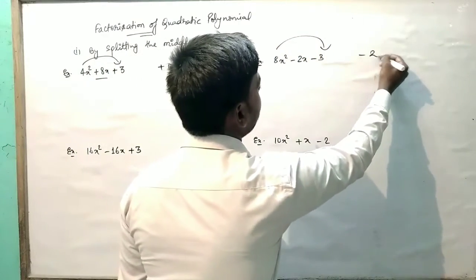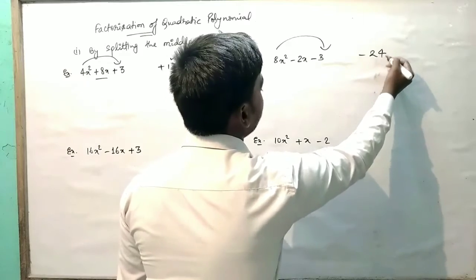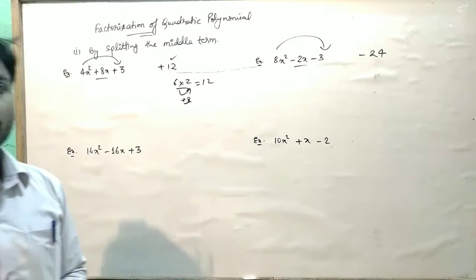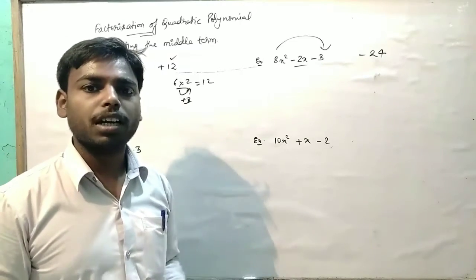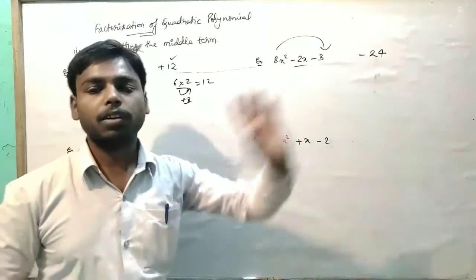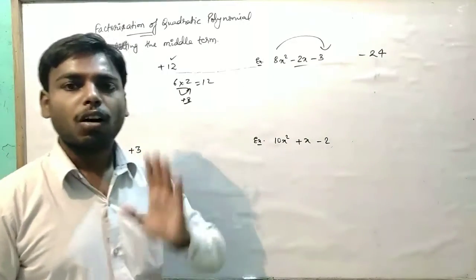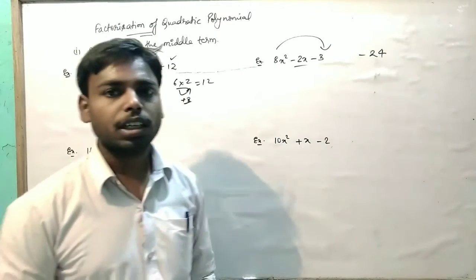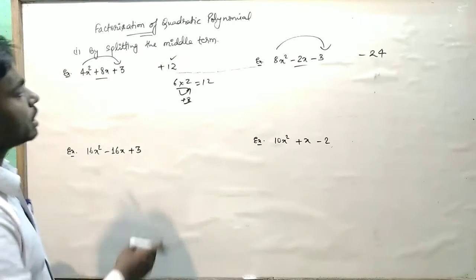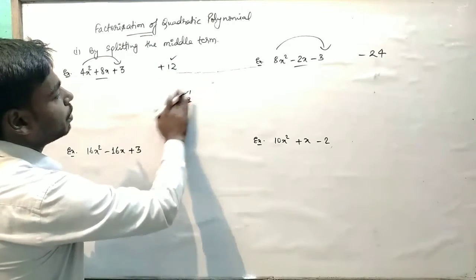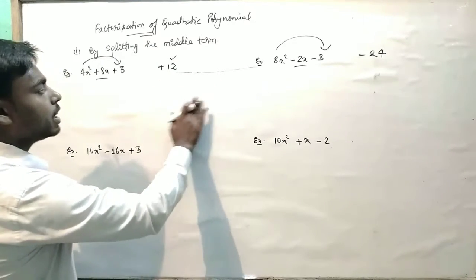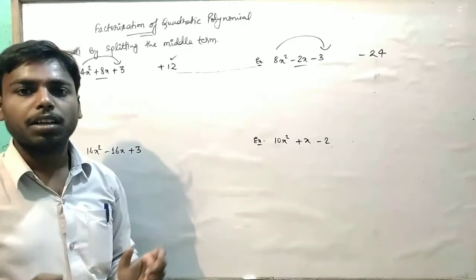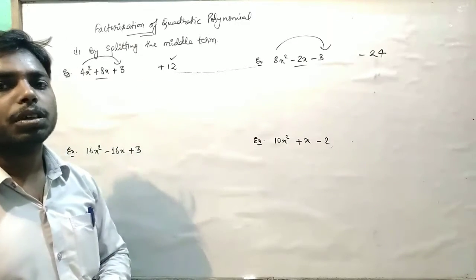अब इसमें multiply करेंगे तो क्या मिलेगा — 24. अब इस middle term को ऐसा split करना है कि multiplication करने पर 24 आए और subtraction करने पर minus 2 मिले। तो पहले हम multiply करेंगे, और देखेंगे कि यहाँ sign क्या मिला है — positive 12 और negative 12.